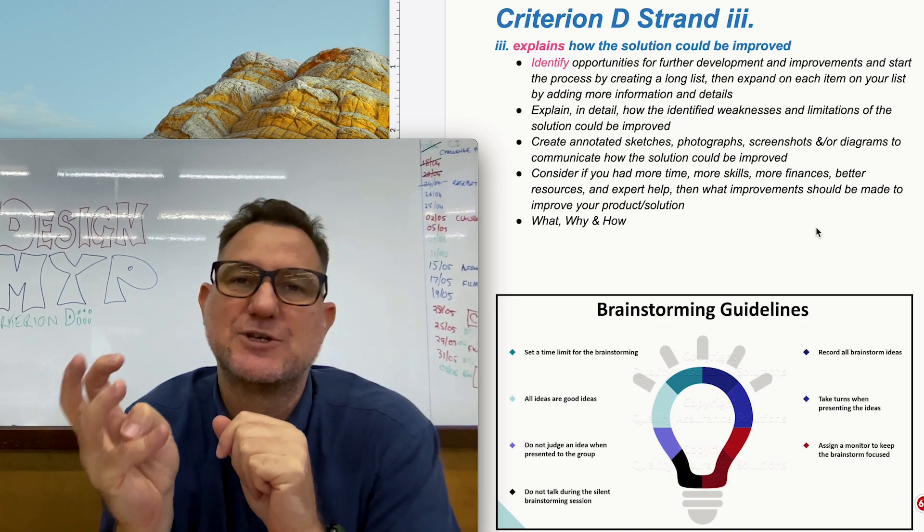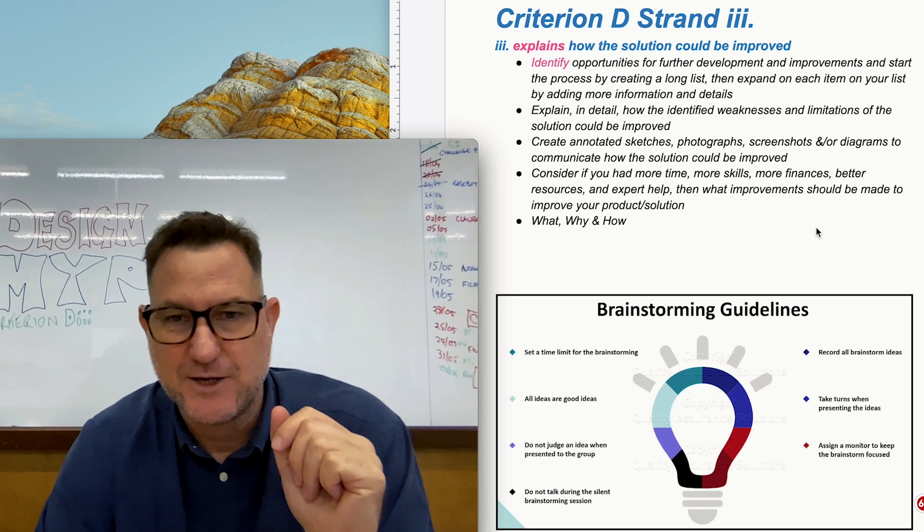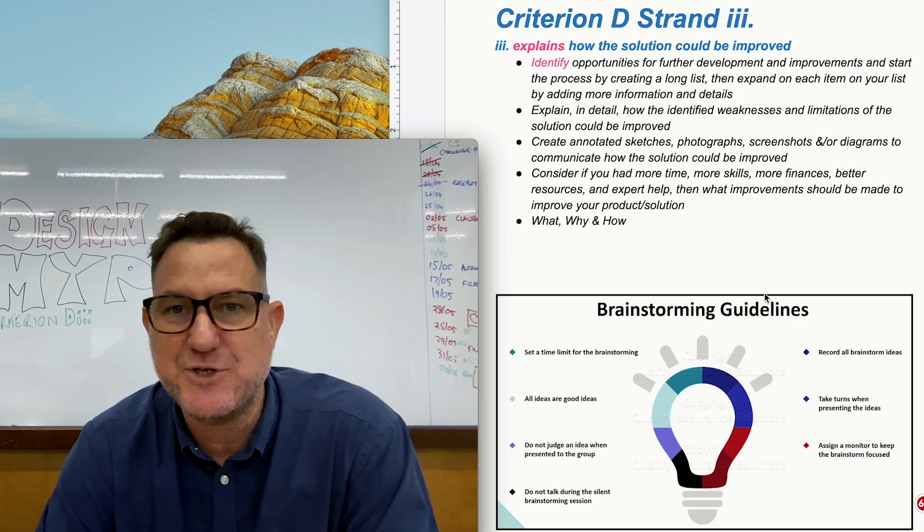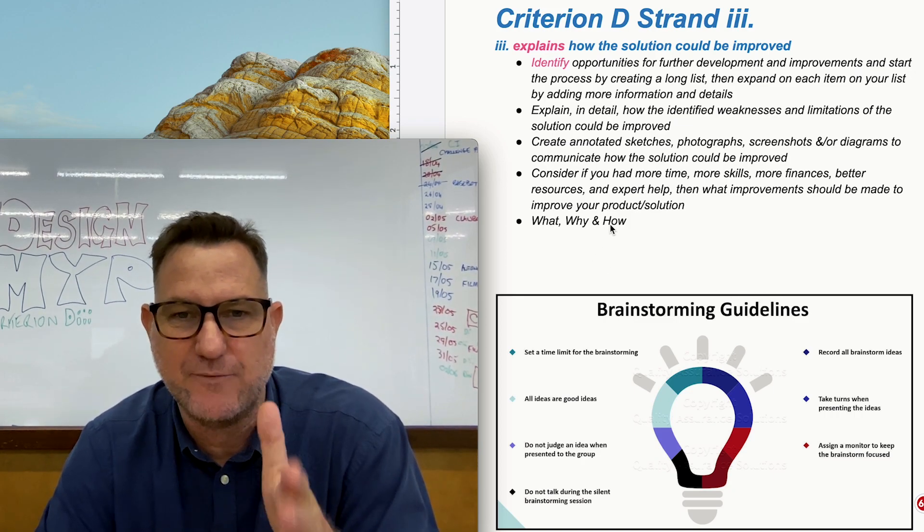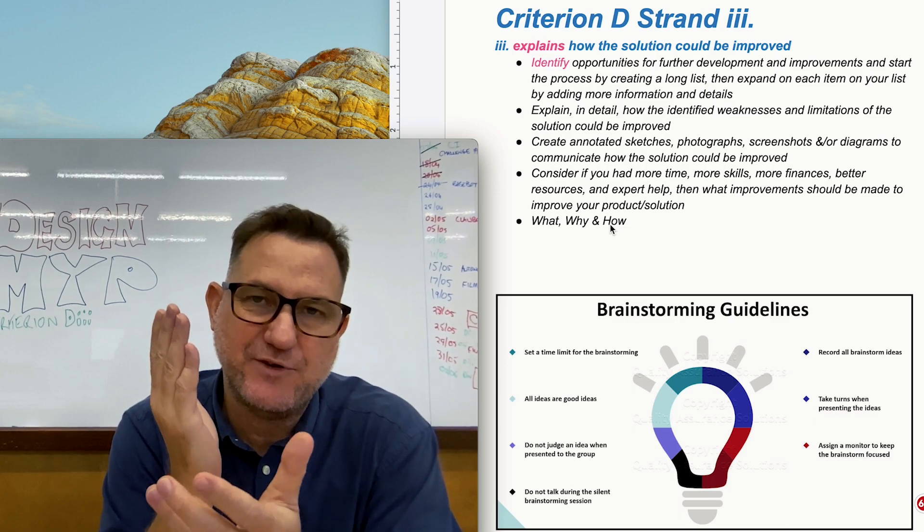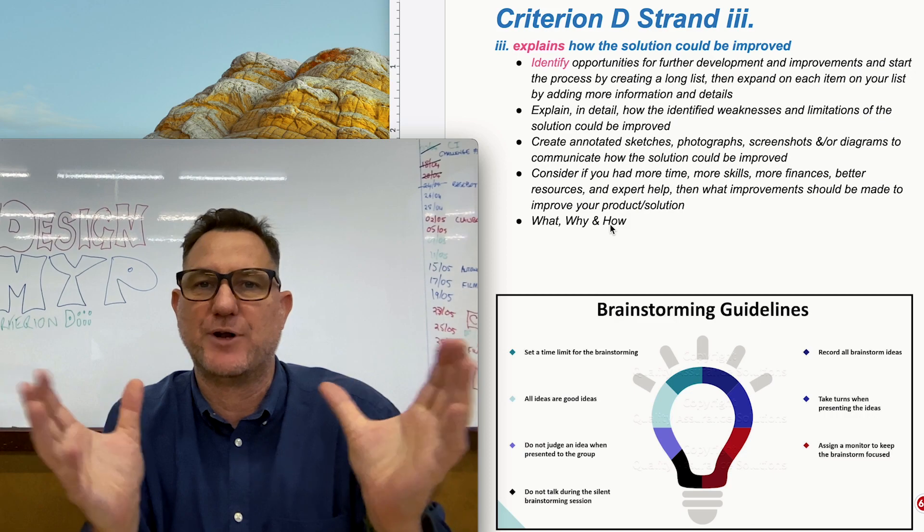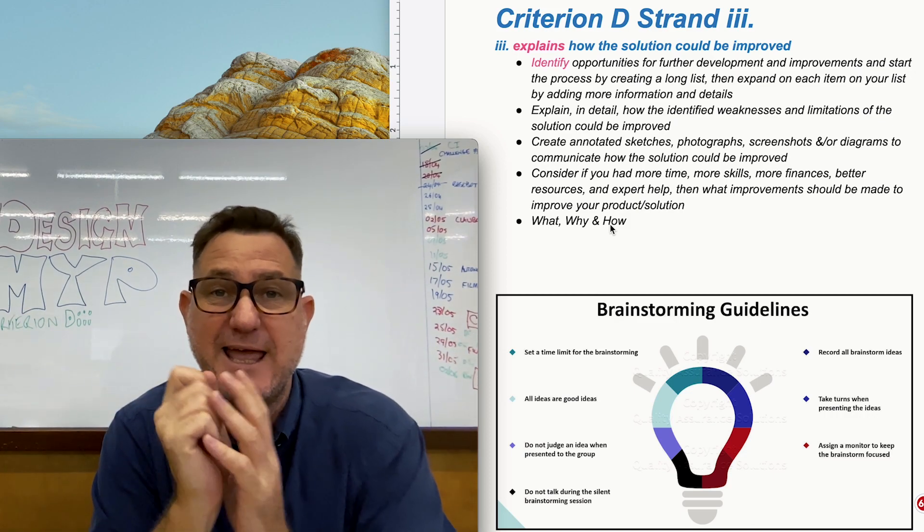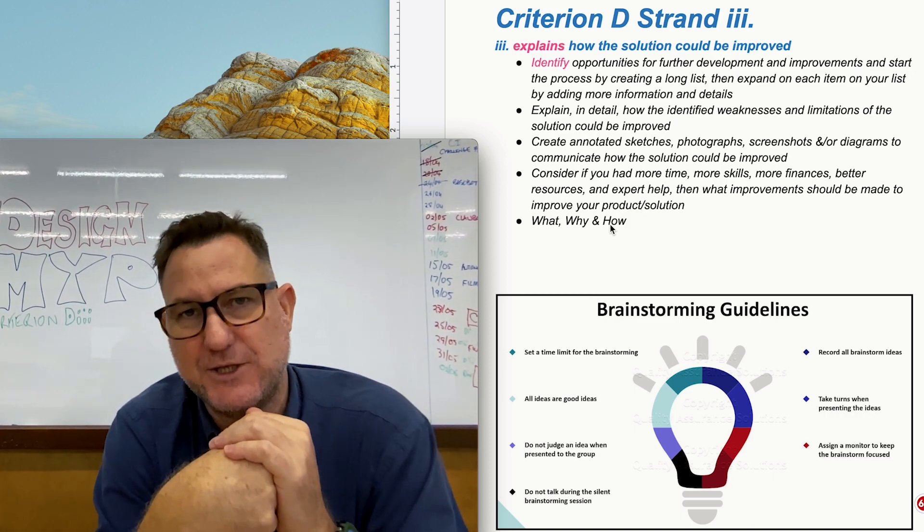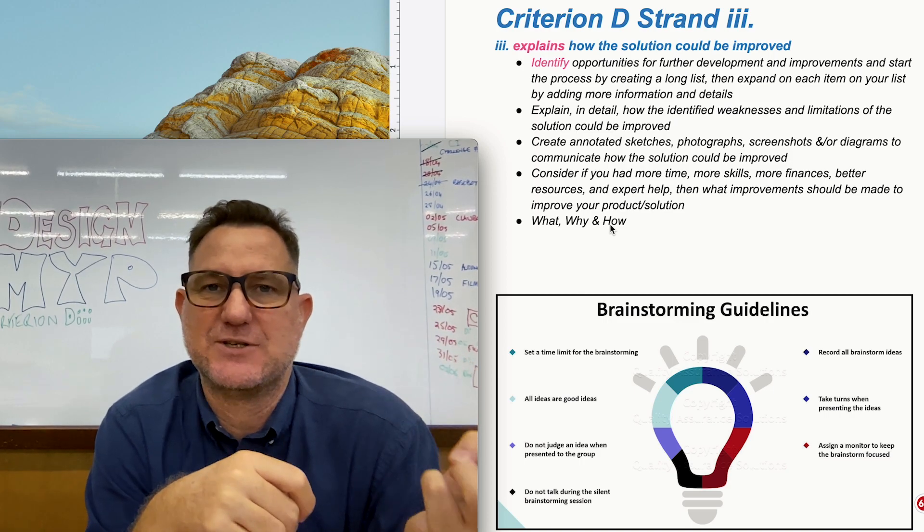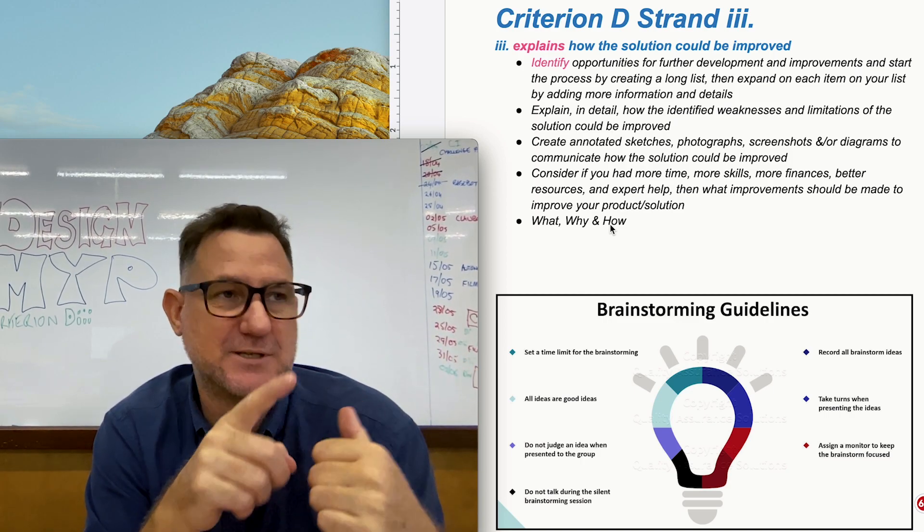Okay I've got some images here. Now the last bullet point here I want to emphasize, be specific about what you actually think should be changed. Don't just talk about the overall product, be specific about certain things. And I'll tell you what if you're struggling to do this just refer back to your design specifications and you can use that as a starting point.